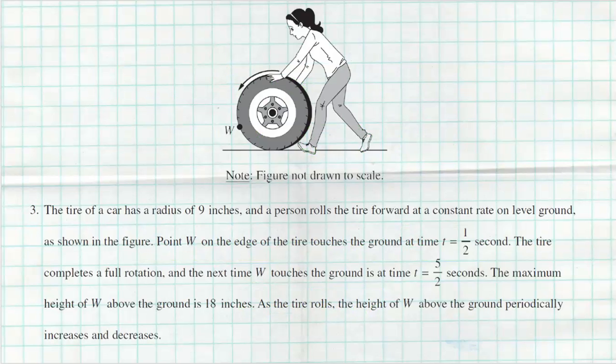The tire of a car has a radius of nine inches, and a person rolls the tire forward at a constant rate on level ground as shown in the figure. Point W on the edge of the tire touches the ground at time t equals one half second. The tire completes a full rotation and the next time W touches the ground is at five and a half seconds. The maximum height of W above the ground is 18 inches, and as the tire rolls, the height of W above the ground periodically increases and decreases.